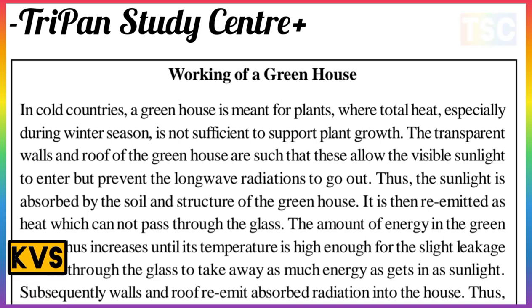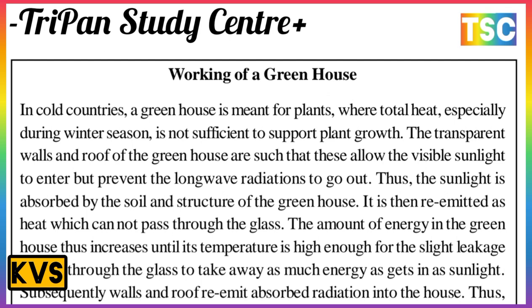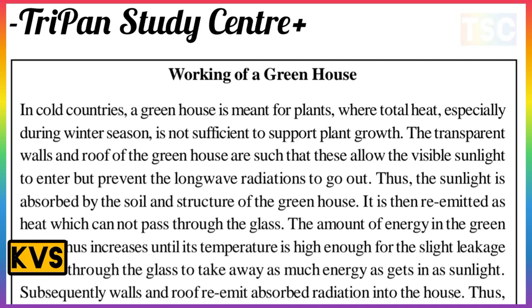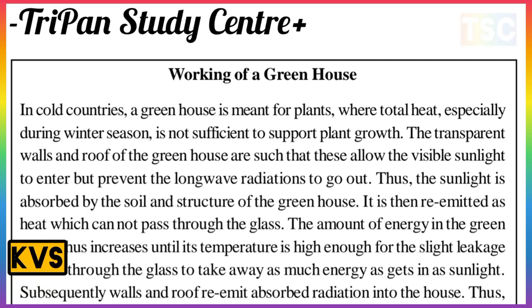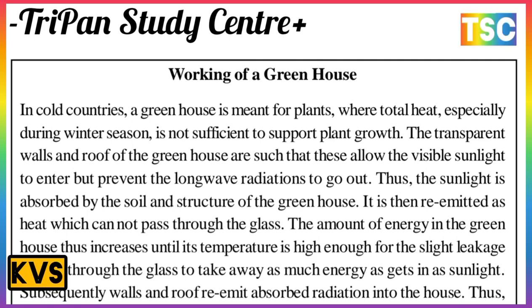The sunlight is absorbed by the soil and structure of the greenhouse and is re-emitted as heat, which cannot pass through the glass. The amount of energy in the greenhouse thus increases until the temperature is high enough that the slight leakage of heat through the glass takes away as much energy as it gets in sunlight.